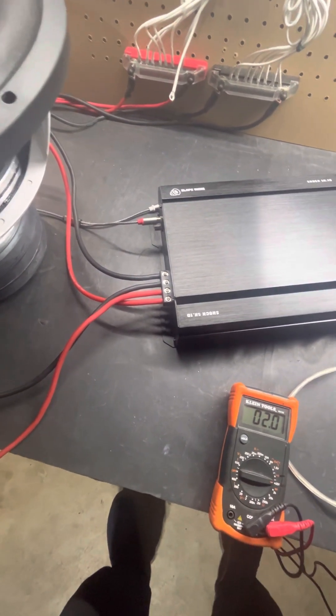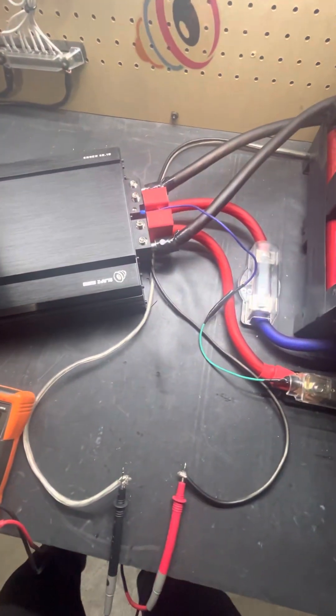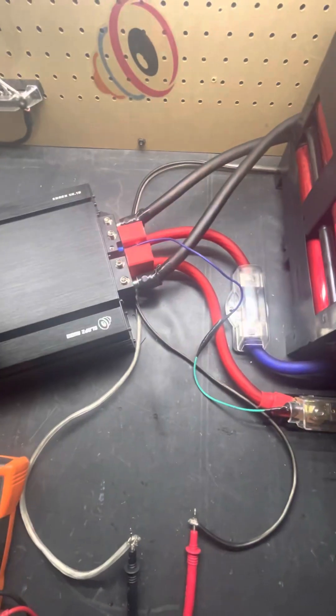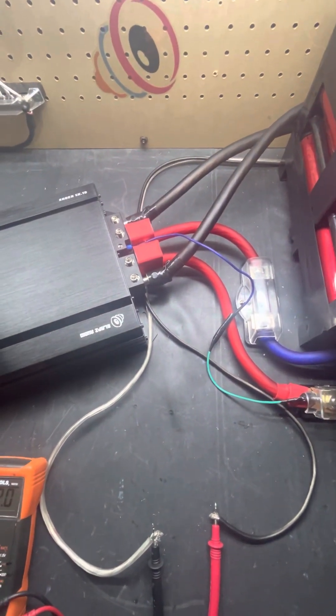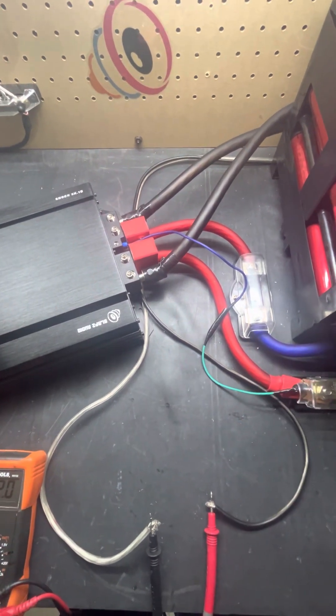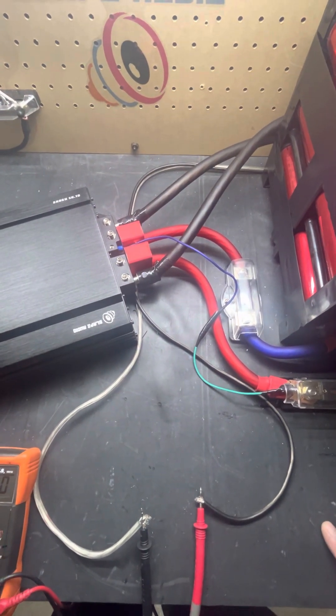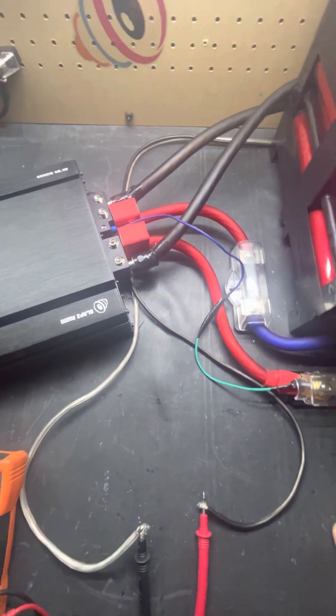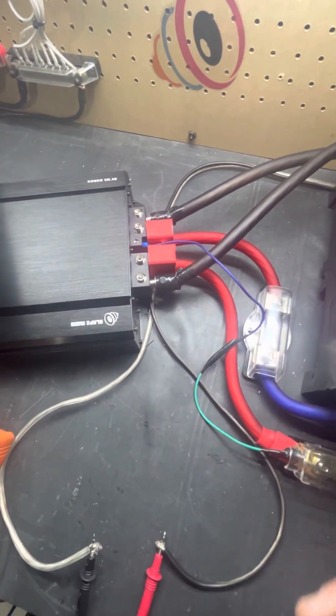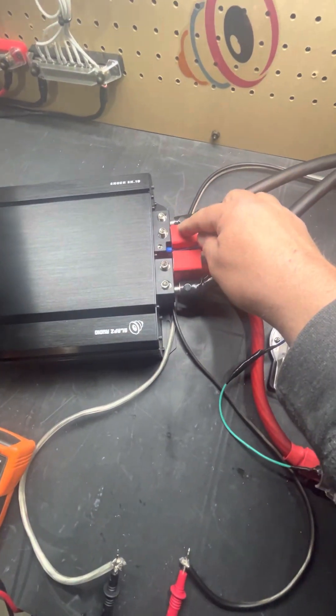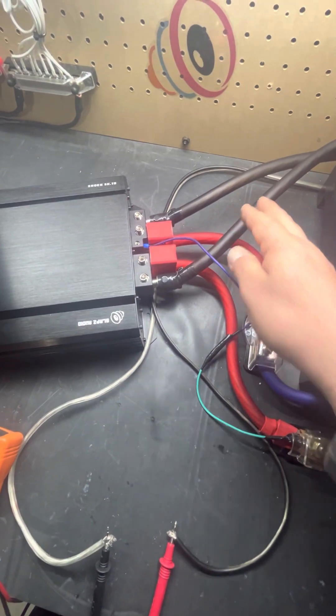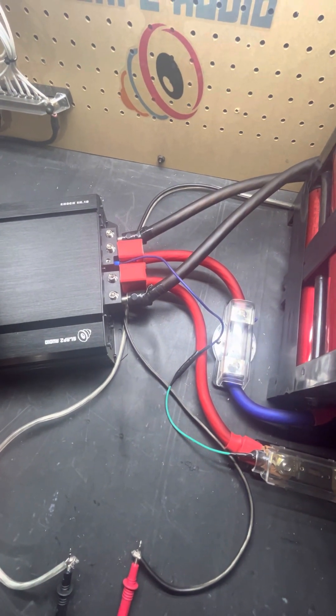We'll start with the positive and ground inputs. Obviously the 3k is only going to take one run of 1-ought power wire, positive and ground. In this case we have a 5k. The 8k would also be the same as this, so you need to do two 1-ought runs. You have two terminals for the positives and two 1-ought runs for the ground bolted into the frame.